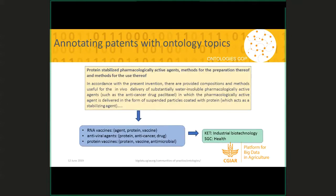Here's an example of the final output, which is annotating the data with topics. In the big yellow box we have an example of a patent. We extract and match it to topics such as RNA vaccines, using keywords like agent, protein, and vaccine found in the text. This leads us to annotate — we get lots of topics and keywords, these are scored, and then we pick the best ones. In this case, it might be industrial biotechnology and health as our final topics.